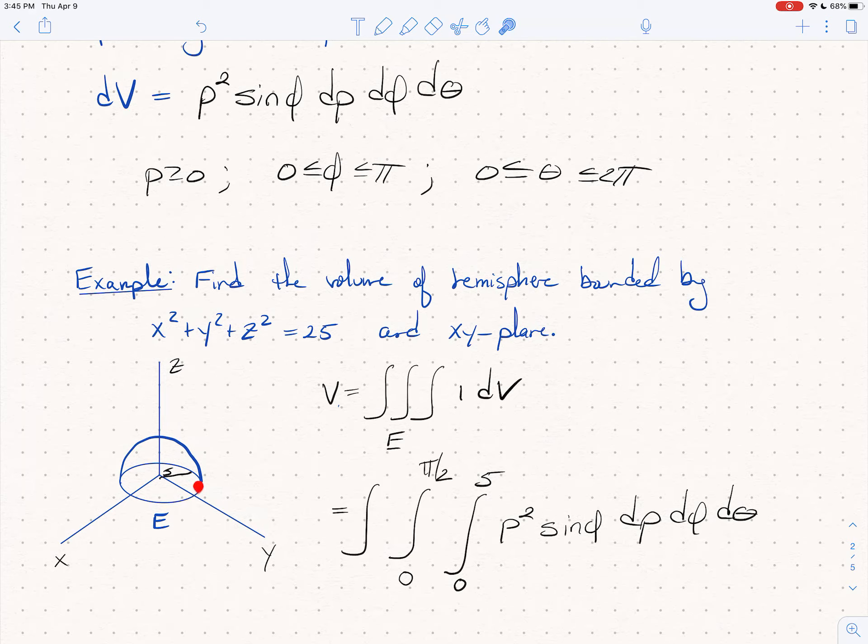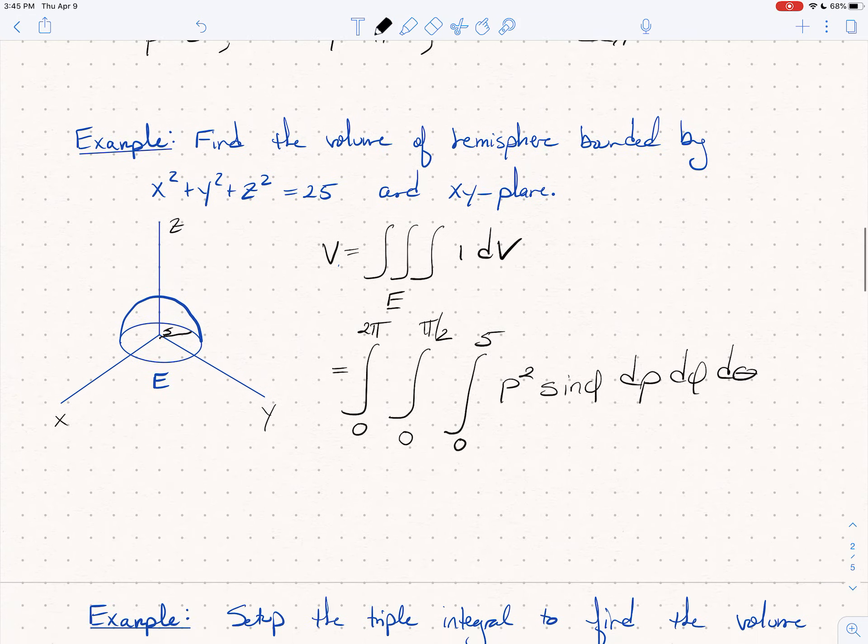So now theta, hopefully it's immediately clear, theta swings all the way around. So theta goes from 0 to 2 pi. We just need to evaluate this thing.